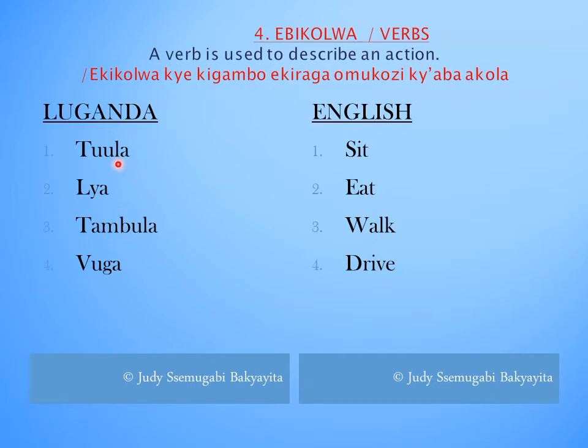Verbs recap: Tula — sit. Leah — eat. Tumblr — walk. Vuga — drive.